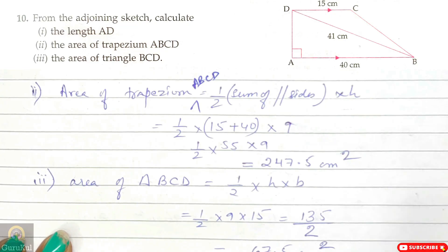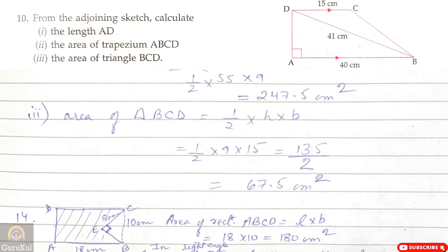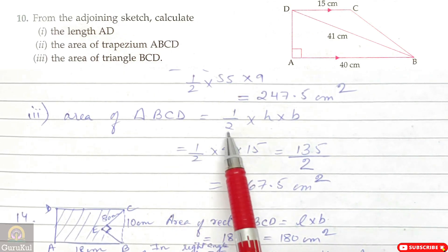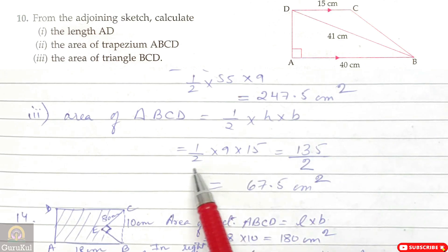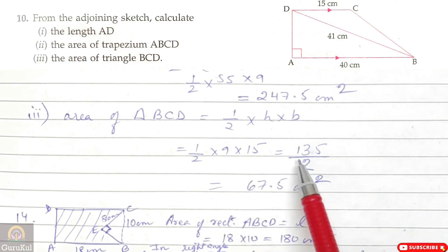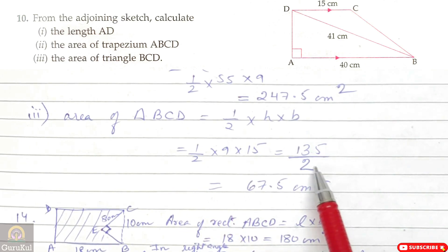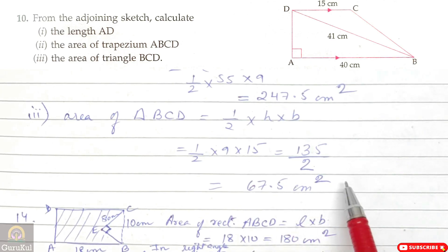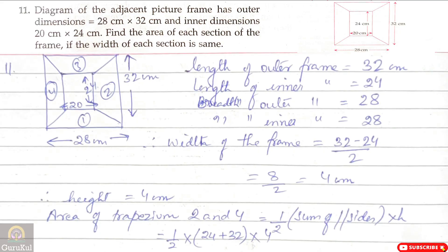Part 3 of question 10: Area of triangle BCD. Base = 15 cm and height = 9 cm (found in part 1). So half into 9 into 15 = 135 by 2 = 67.5 cm square. And this is the answer.